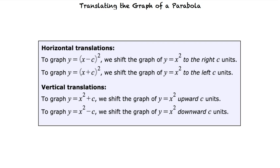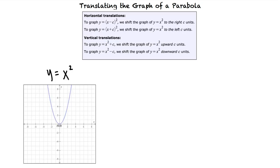Let's take a look at an example problem. Let's say we have the graph of y equals x squared, and we want to translate it to result in the graph of y equals the quantity x minus 3 squared. It looks like we have subtracted 3 from x inside the parentheses. According to our rules, we need to shift the graph of y equals x squared to the right three units. That's right.